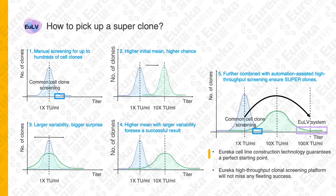So how do you screen a superclone? There are three key factors: first, a higher population mean of viral production; second, a higher population variance of viral production; and third, a large number of screened samples. In these figures, the x-axis is the viral production titer and the y-axis is the number of clones. By our technology in cell line construction, we increased both average production titer and performance variance, guaranteeing a good start for clone selection. We adopted an automation-assisted high-throughput screening platform to ensure we won't miss the few superclones.